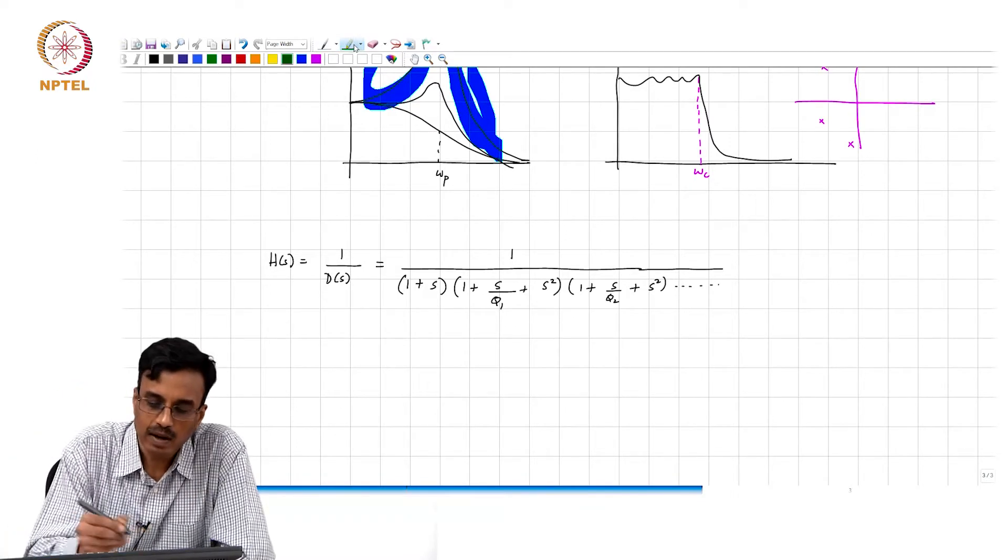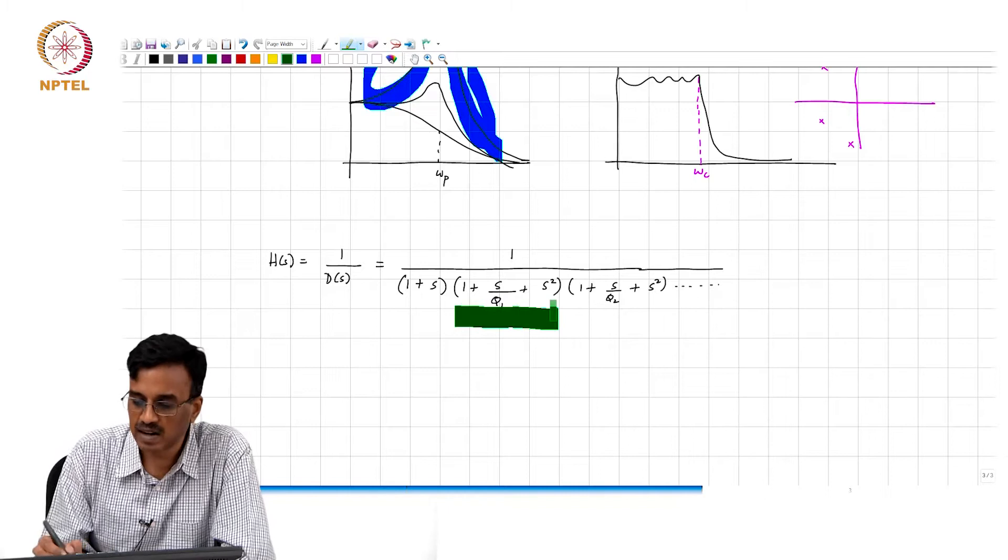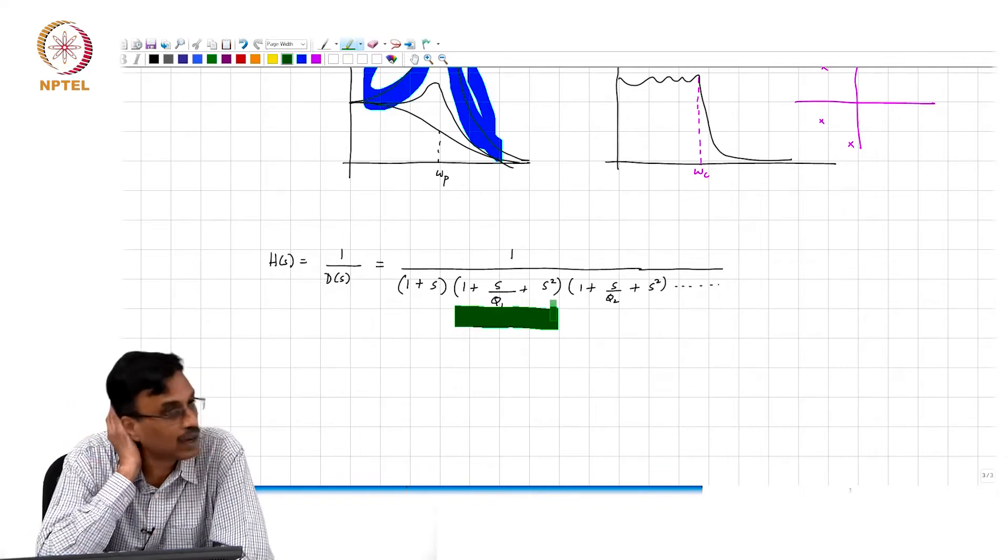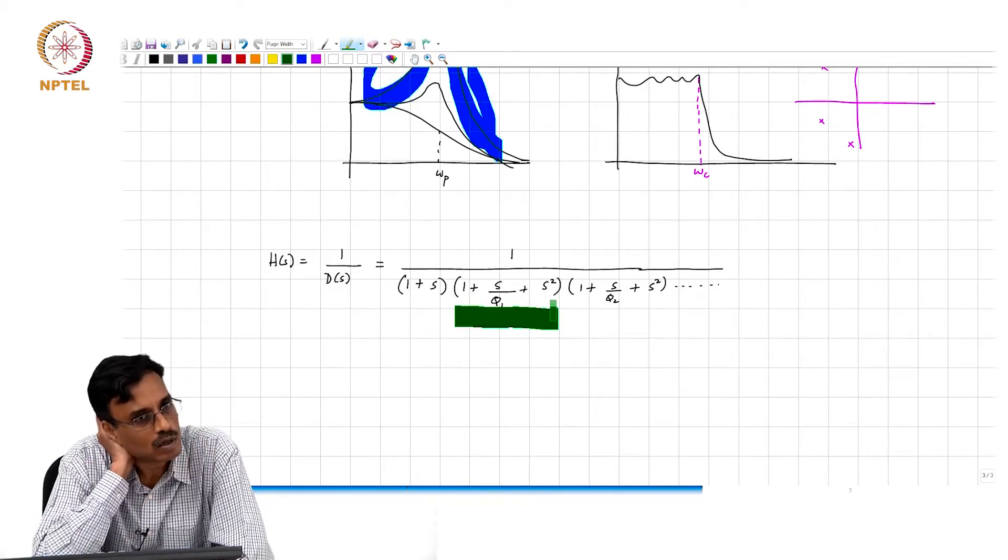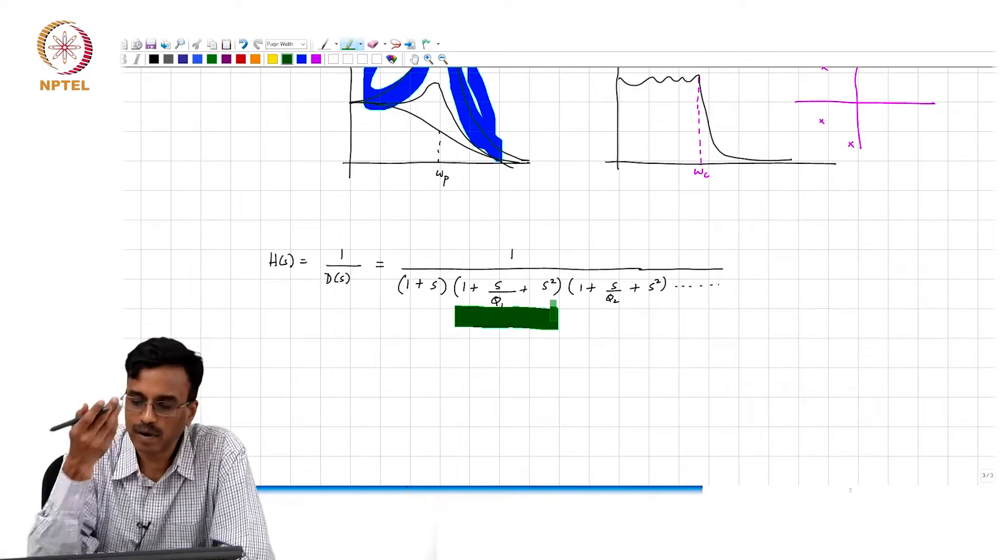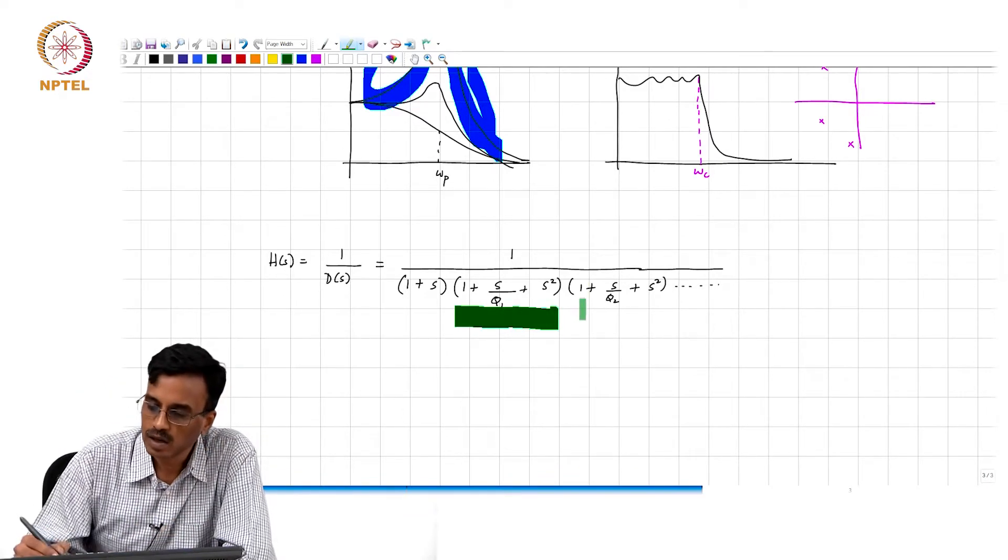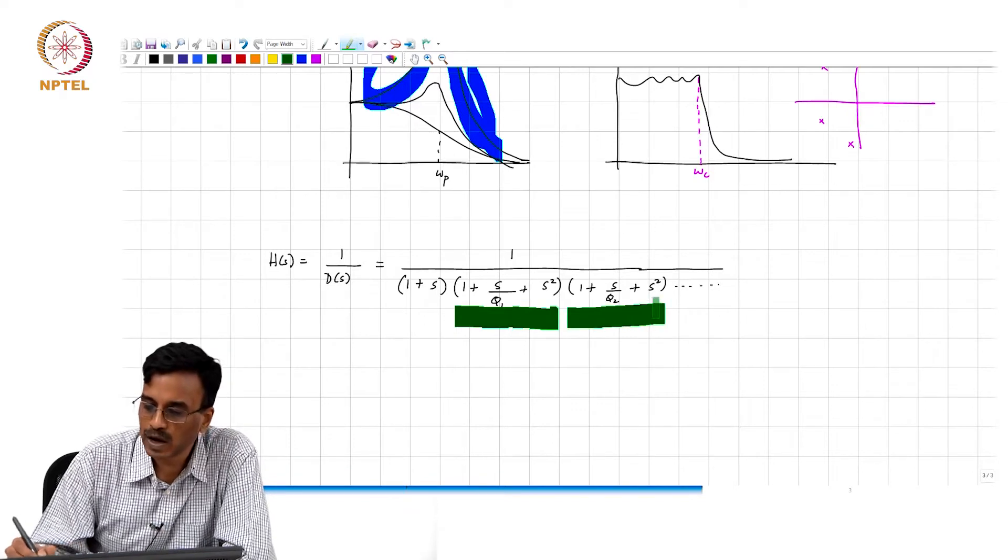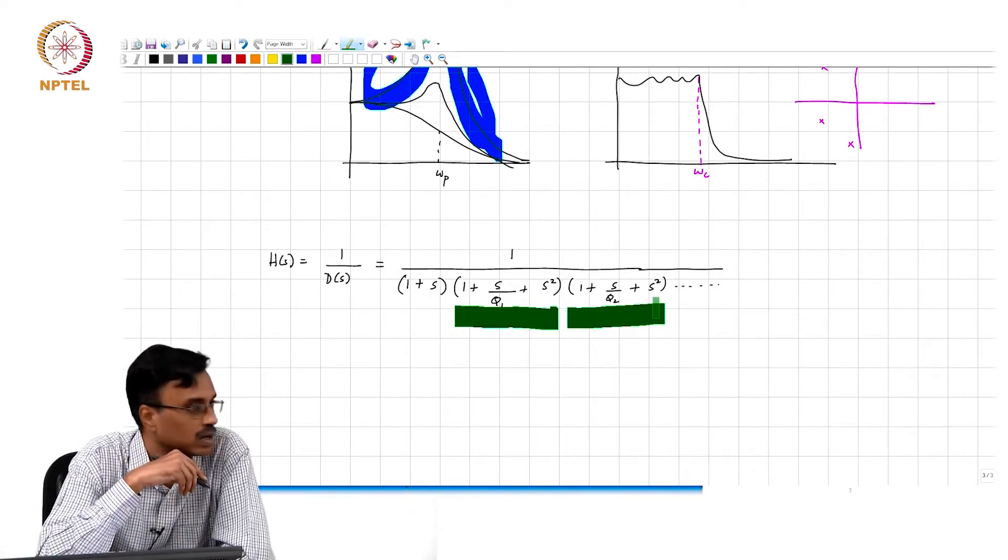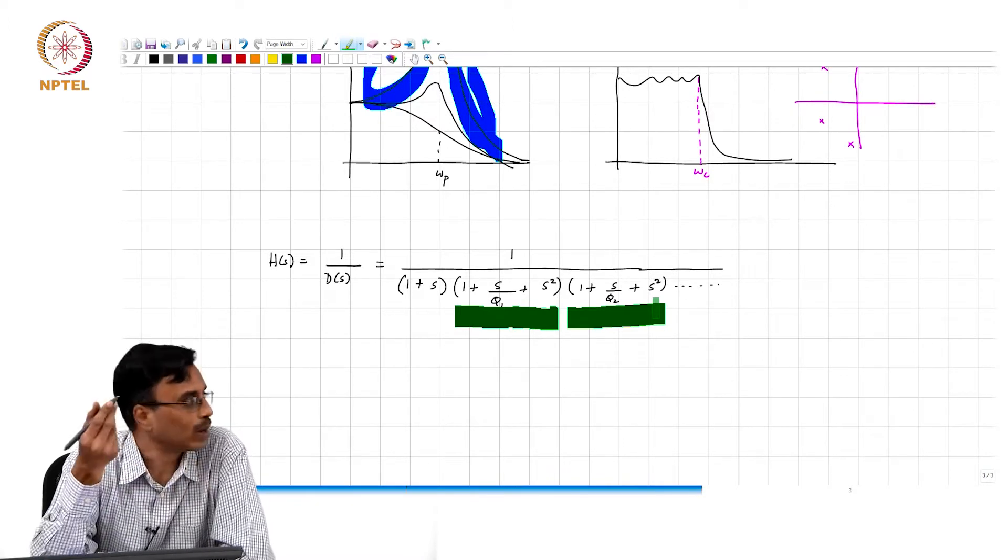If you write this in standard second order form, what does omega_p correspond to? 1. And q1 corresponds to the quality factor. What comment can we make about the omega_p of this second order section? It is also 1.